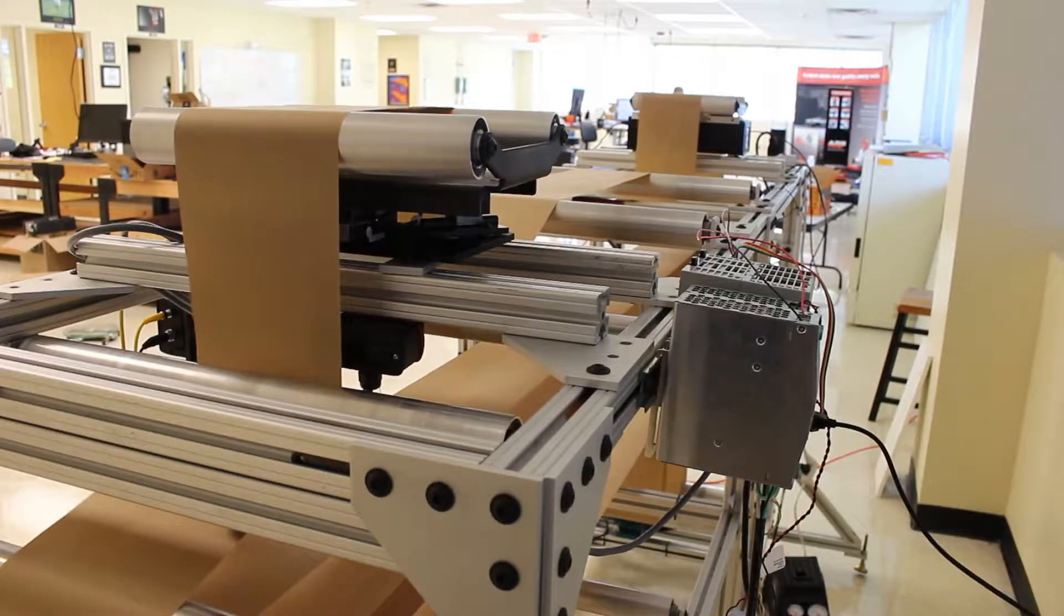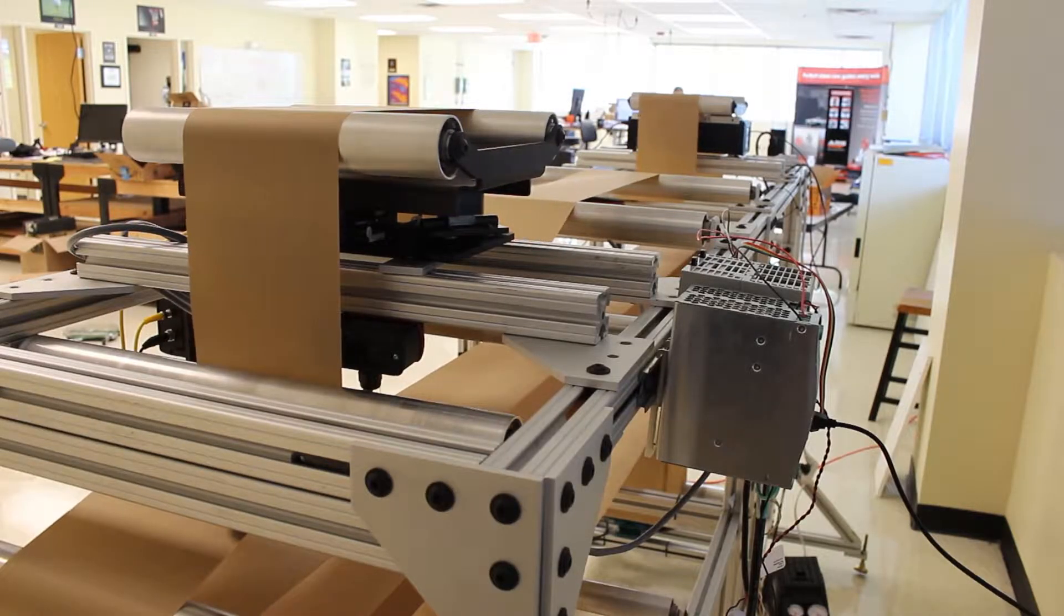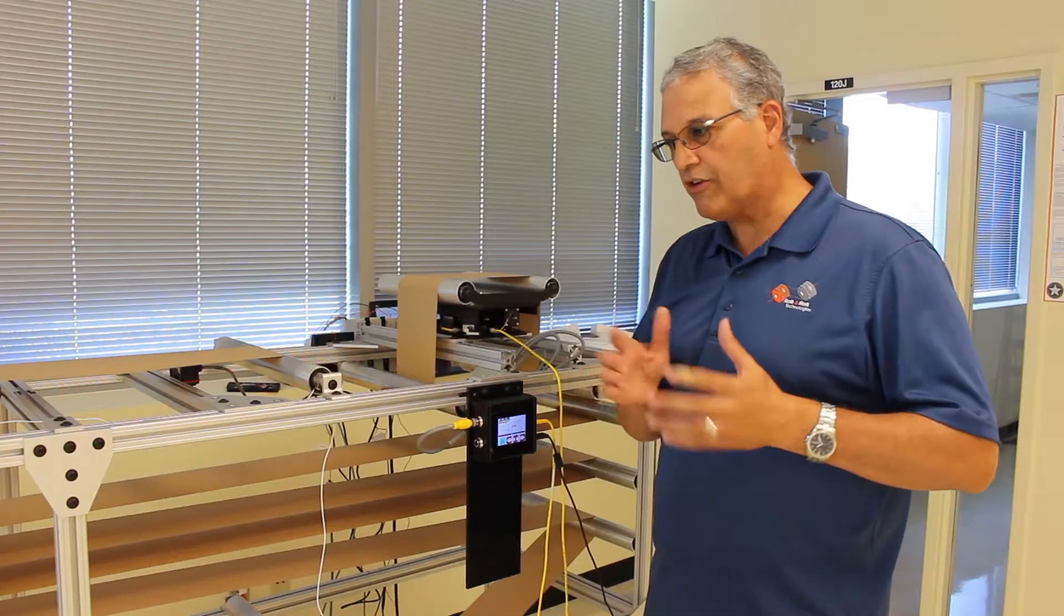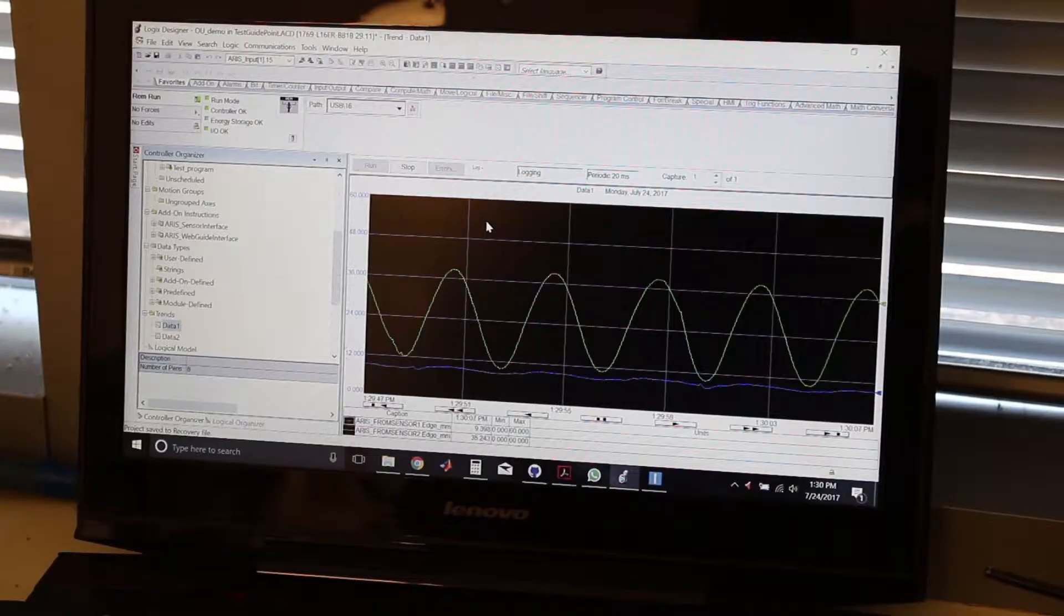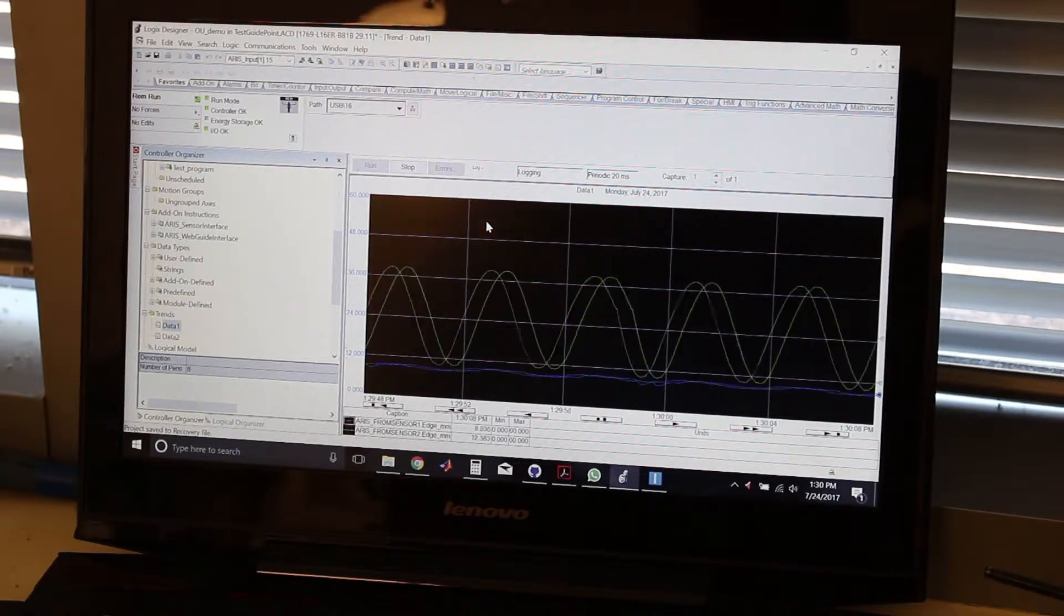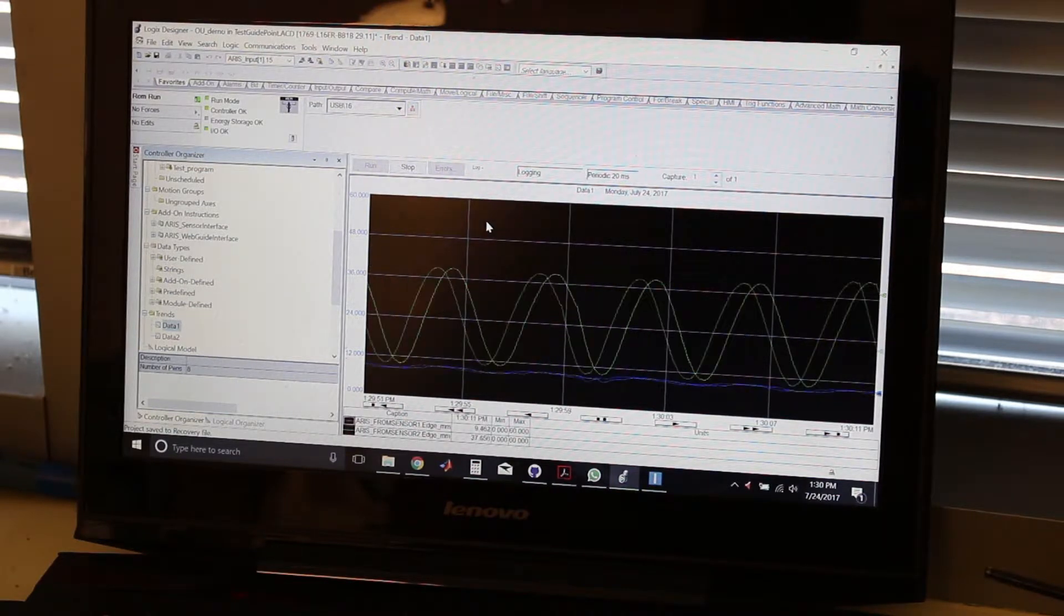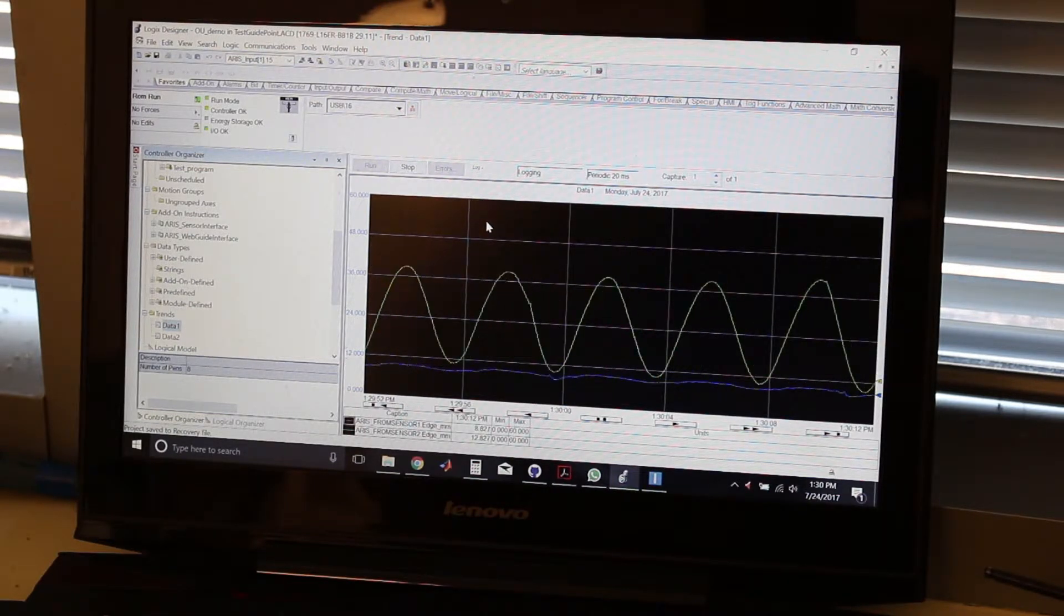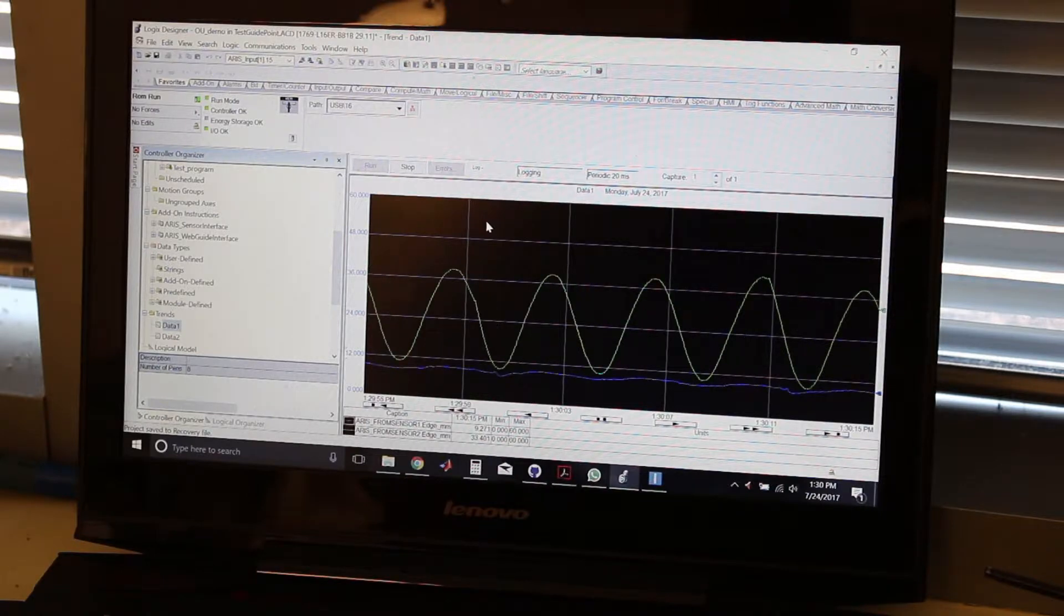What we're trying to do right now is put a disturbance upstream—a sinusoidal disturbance—and then we're recording and comparing what the material is doing coming in, how it's moving, and then comparing how the material is coming out as a result of our correction through our web guide.